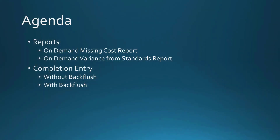We've talked about the two reports. Now we're going to do the completion entry — first for a work ticket that does not have backflush as a processing option, and then we'll do another one with backflush.